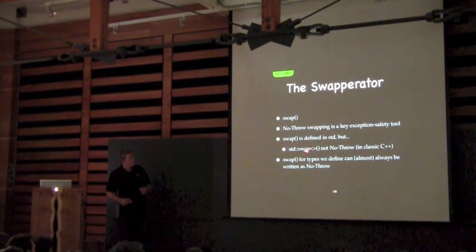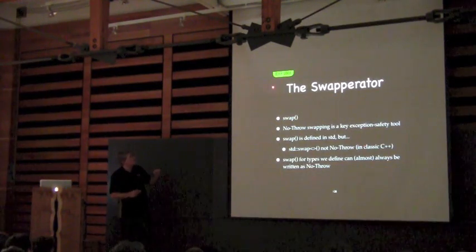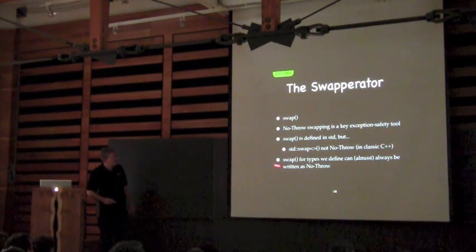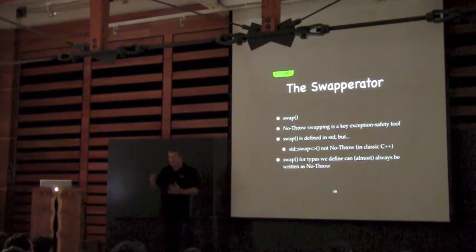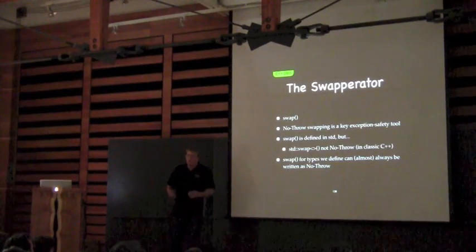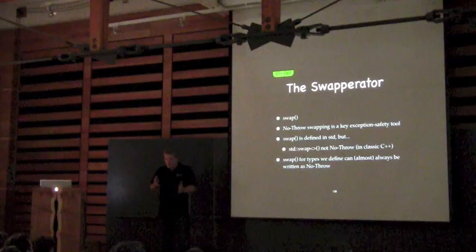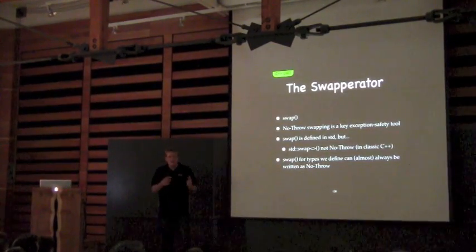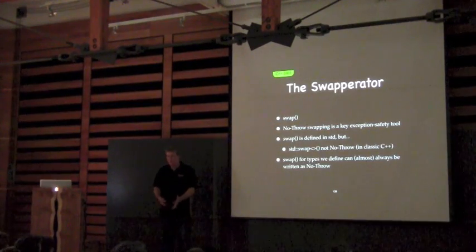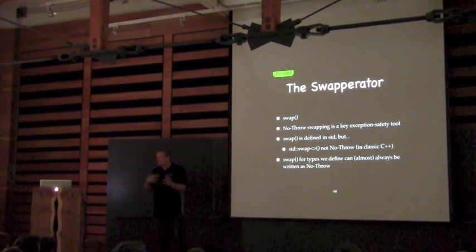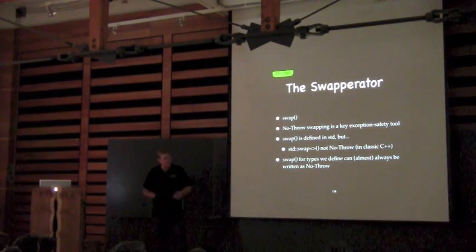Swap is defined in the standard, but the swap defined in the standard is not no-throw — at least in 2003. However, if you think about what our objects are made up of — fundamentally you get down to ints, pointers, doubles — none of these cannot be swapped without throwing. It turns out all the fundamental things can be swapped without throwing. So in theory, anything should be swappable without throwing. We should be able to make non-throwing swap versions of our objects.